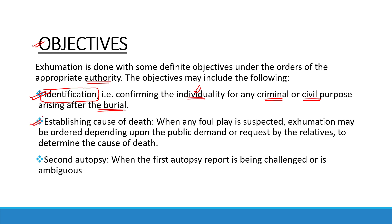The second objective is establishing cause of death. If we need to find out what the cause of death was, when foul play is suspected — meaning if we feel that a person died in a particular manner but the real cause is different — then exhumation can be performed. Exhumation may be ordered on public demand or request by relatives to determine the true cause of death.